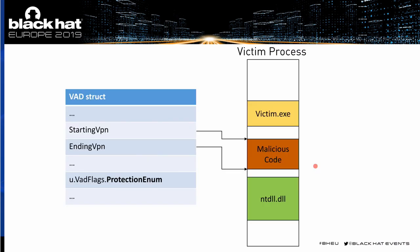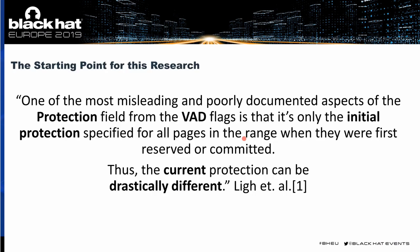A little background: what information is Malfind using? It's mainly using a struct called VAD — a virtual address descriptor — which describes memory areas. Every memory area in the process space is described by a VAD. The victim.exe has a VAD associated with it, NTDLL has one, and also the malicious code. Besides the pointers to where the code is beginning and ending, there's also a protection field which states which protection this memory area has. But there's one problem: as stated in The Art of Memory Forensics by Ligh et al., the VAD protection stored in the VAD struct is only the initial protection, and the real protection at the point where you take the memory dump might differ drastically.